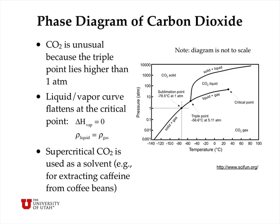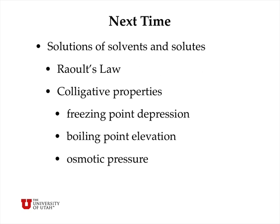Dry ice exists at exactly minus 78.5 Celsius along the sublimation curve, but the liquid really only exists above the triple point at 5.11 atmospheres — you have to pressurize CO2 to get liquid at all. The liquid-vapor curve above 5.11 atmospheres flattens out as it approaches the critical point, where the delta H of vaporization goes to zero and the density of the liquid equals the density of the gas. Supercritical CO2 is used as a solvent, for example for extracting caffeine from coffee beans. Next time we'll look at solutions, Raoult's Law for ideal solutions, and colligative properties: freezing point depression, boiling point elevation, and osmotic pressure.